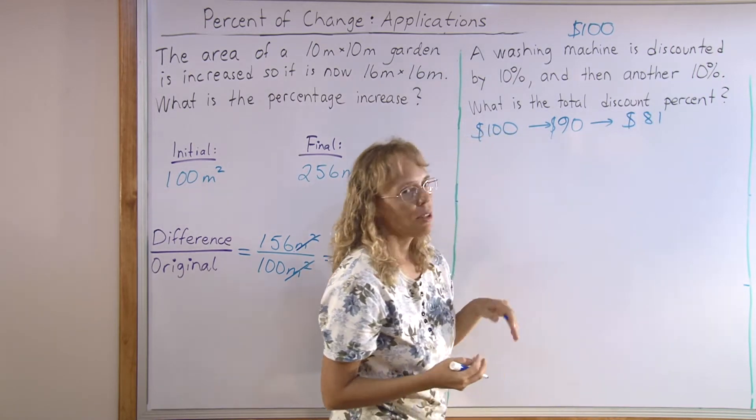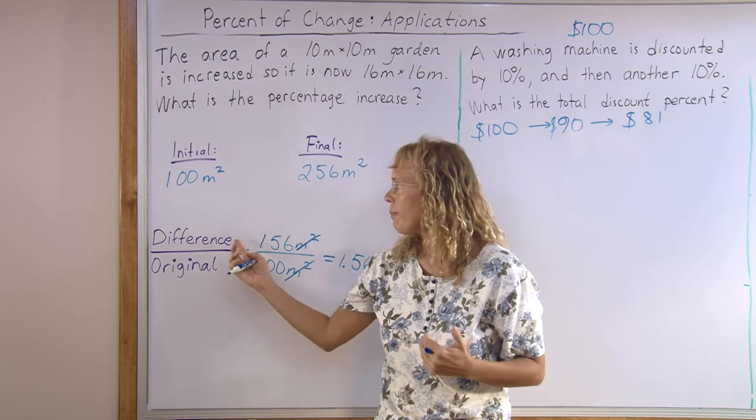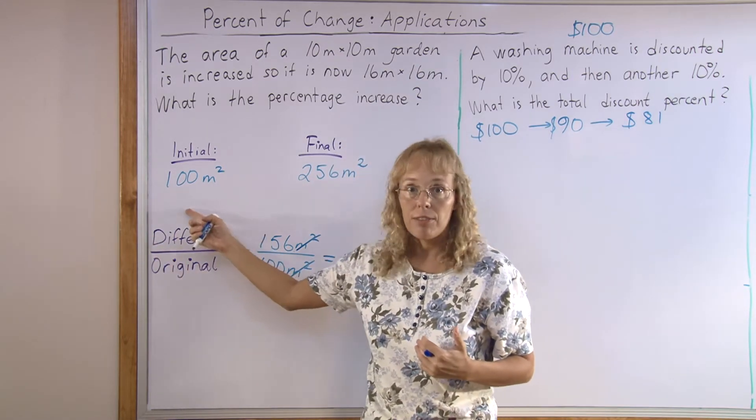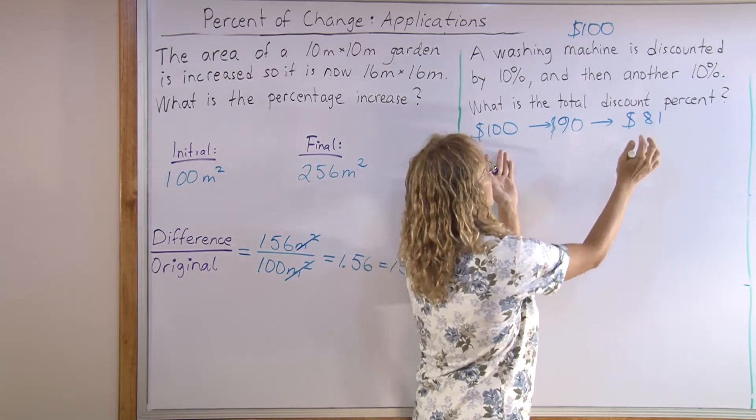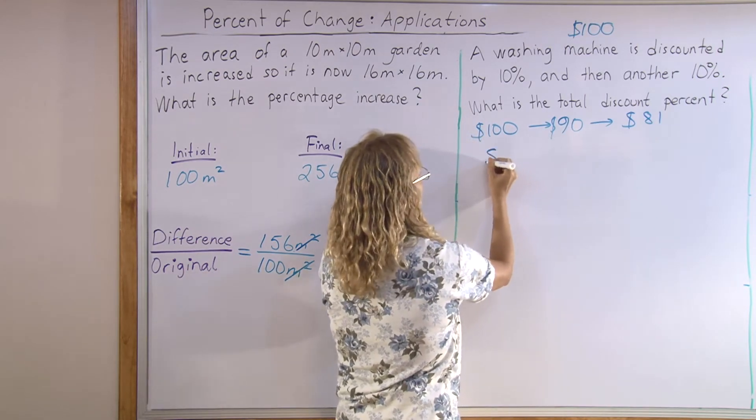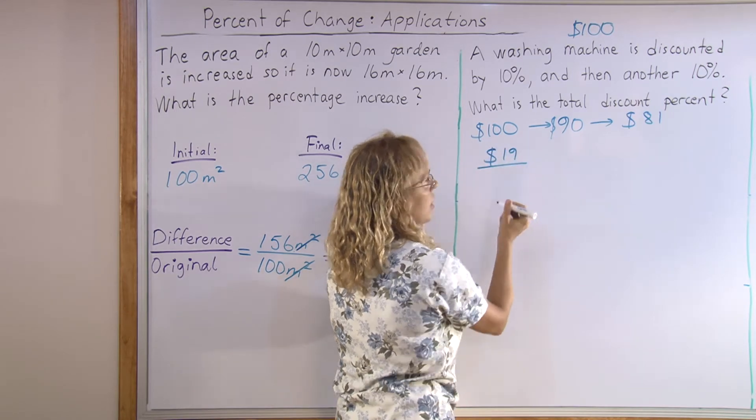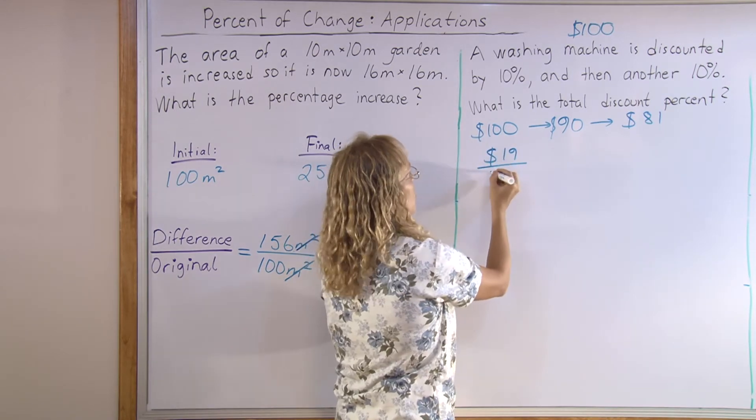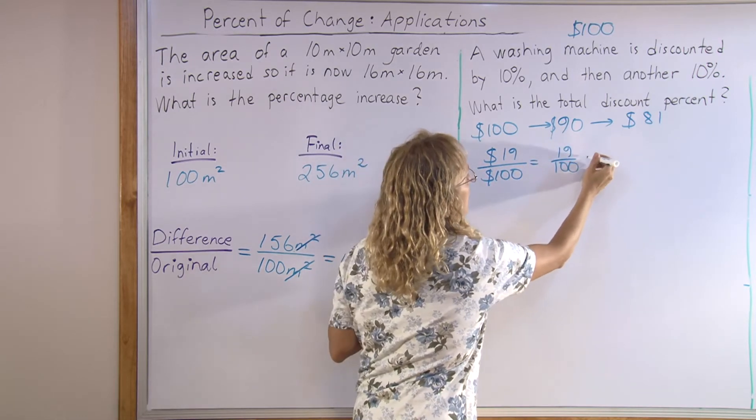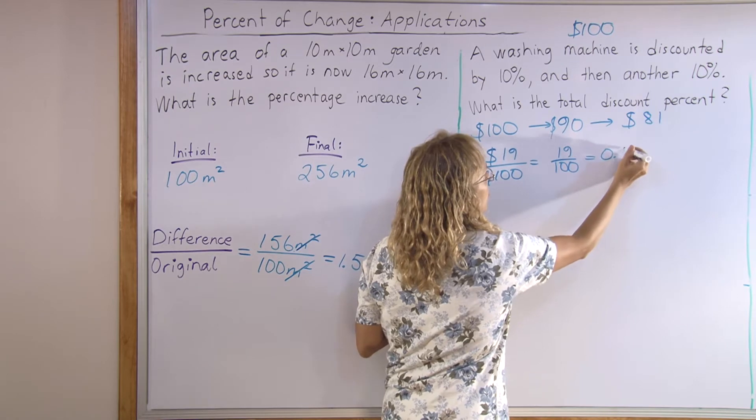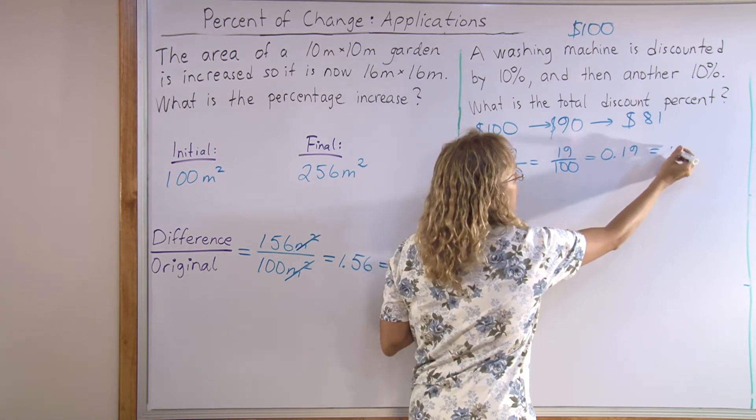Now, let's look at the total discount percent using this formula where we find the difference and divide that by the original price. The difference here is $19. And divide that by 100, the original price. And we get 19 over 100, which is as a decimal, 0.19 or 19%.